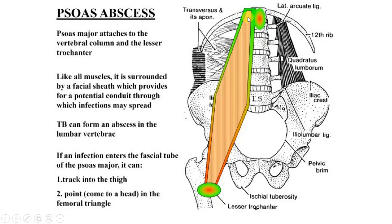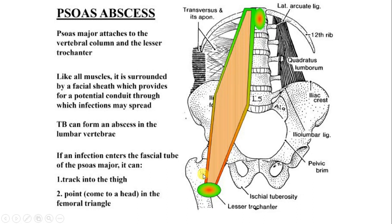In the schematic diagram, the region of the psoas muscle and its insertion have been shown. Tuberculosis is the most common cause, and Crohn's disease of the small intestine — ileum disease — is the second most common cause. The pus can enter the fascial tube of the psoas major and track into the thigh, into the femoral triangle. It will also involve the lumbosacral plexus, and pain will be referred to the hip joint, the anterior of the thigh, and the knee joint.